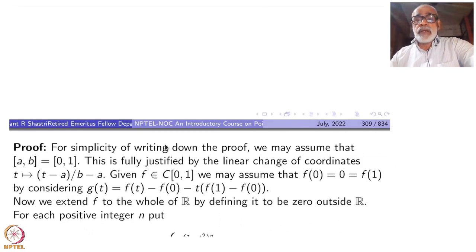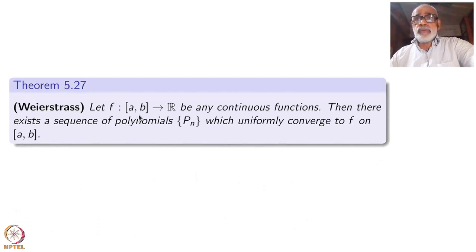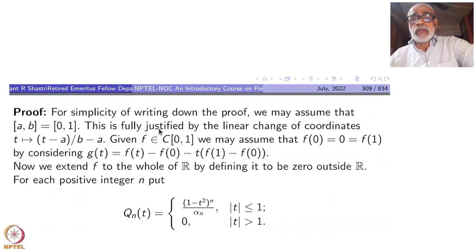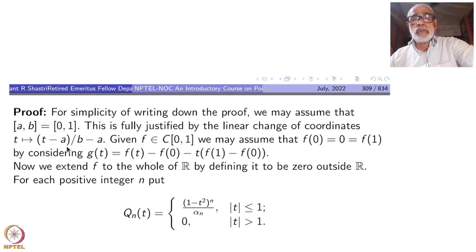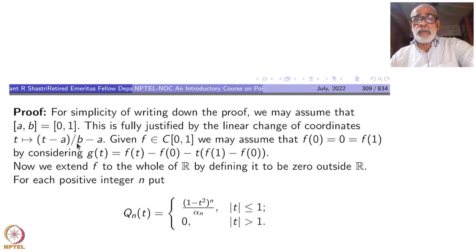For simplicity of writing down the proof, I will assume that the interval is [0,1]. This is no loss of generality because you can make a linear change of variable in the domain, namely by taking t going to (t minus a) divided by (b minus a). When t equals a, this will be 0; when t equals b, this will be 1. So the interval [a,b] maps to [0,1], and a polynomial in the new variable is still a polynomial.